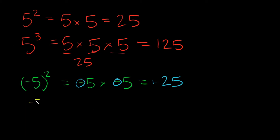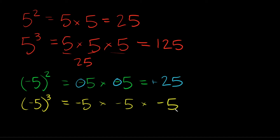What if we had negative 5 cubed? This is equal to negative 5 times negative 5 times negative 5. Negative 5 times negative 5 is positive 25. So we have positive 25 times negative 5. A positive times a negative is equal to a negative, and we already saw that this is equal to 125. So negative 5 cubed equals negative 125.